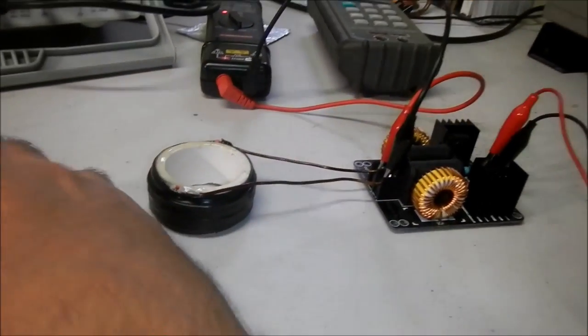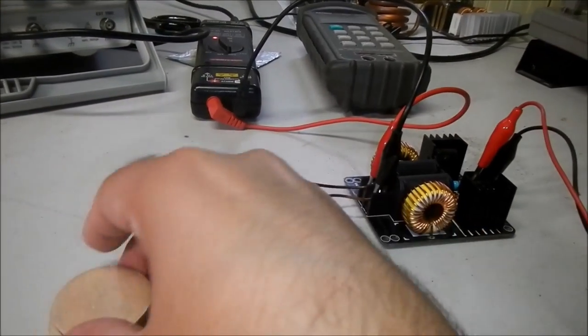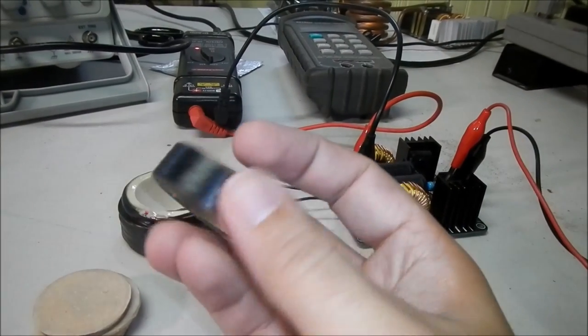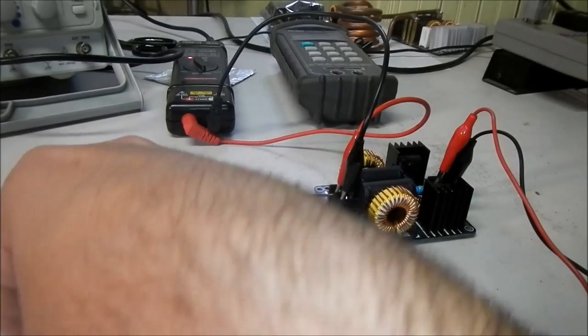Now what I'm going to do next is drop in the copper slugs. This is just four copper slugs. I just put some electrical tape around it to keep it all tidy.